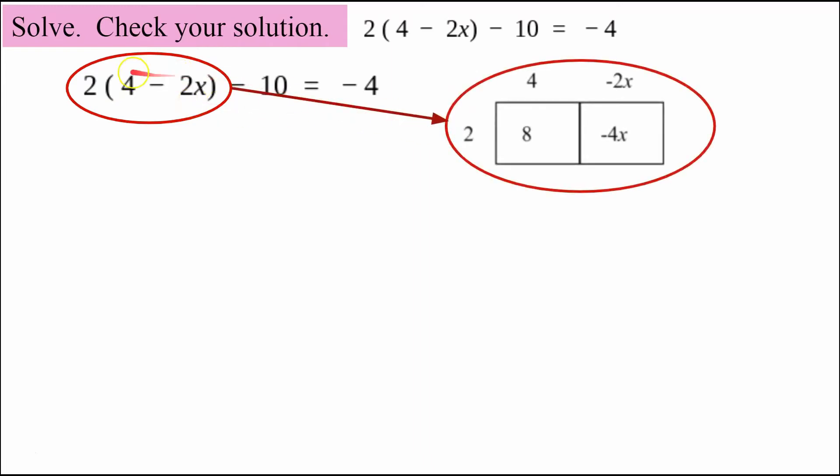So I'm going to bring this over here. This is a bit of a graphic organizer. It's the area model. You can either distribute by multiplying 2 times 4 and 2 times negative 2x. I like to have my students create this graphic organizer, this area model, to make sure that they're not making any errors.